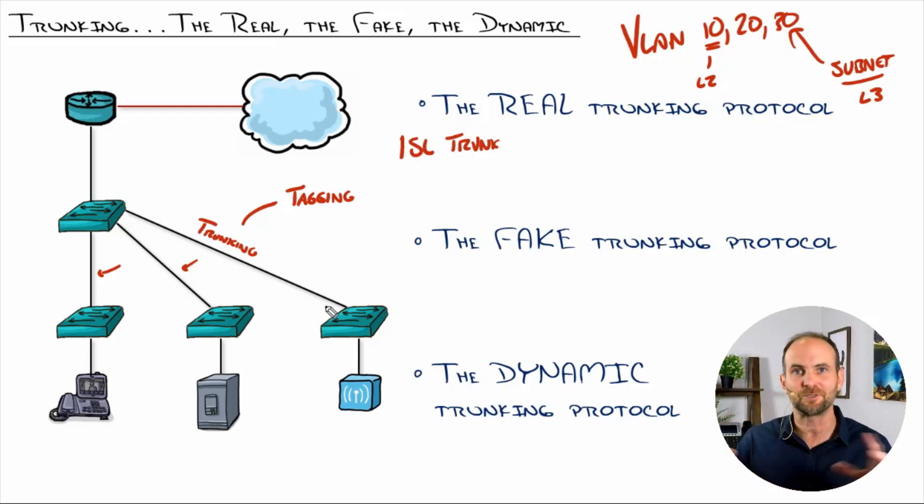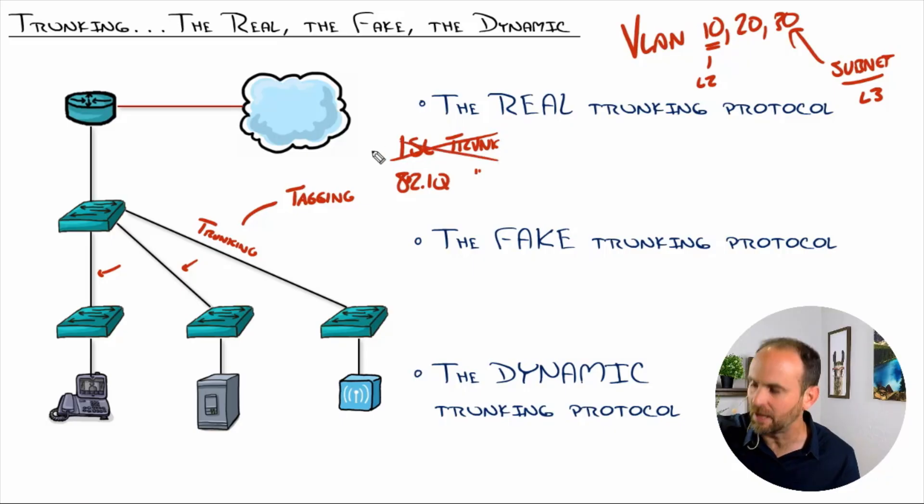But obviously, the industry is going to catch up. You have HP, you have Force 10, you have all of these other switch vendors. There's that Juniper, you know, all the other ones that I can't think of right now, but for good reason. They all caught up. And eventually, the industry said, we need an industry standard 802.1Q trunking protocol. And that has now replaced ISL 100%. So, now with 802.1Q, you have a language where...